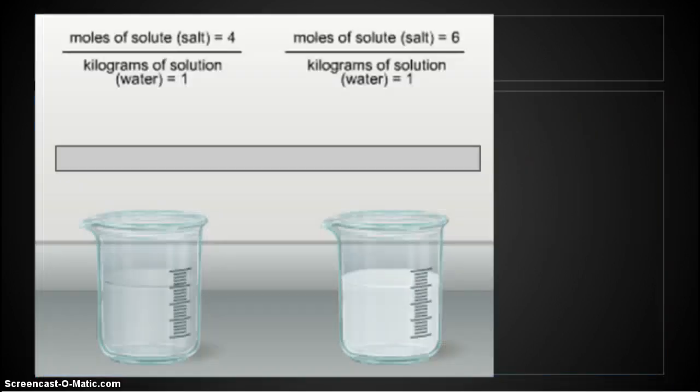So let's look at some examples of molality. We have two different beakers. And if you notice, they even look different. Which one is more concentrated? The one on the left or the one on the right? The one on the right is more concentrated. You can tell that because it's darker. It has more of the solute in it. You can also tell because moles of solute, in this case is salt, is 4 on the left. Moles of solute, the salt, is 6 on the right.